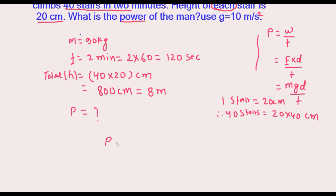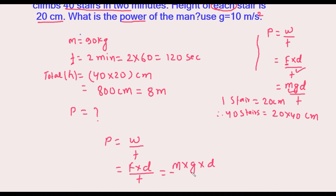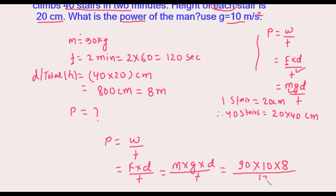We know that power is given by work done upon time taken. Work is given by m into d, so we can write m into d upon t. Force is given by m into g, so power equals m into g into d divided by t. Mass is 90 kg, g is 10, height is 8 meters, and time is 120 seconds.